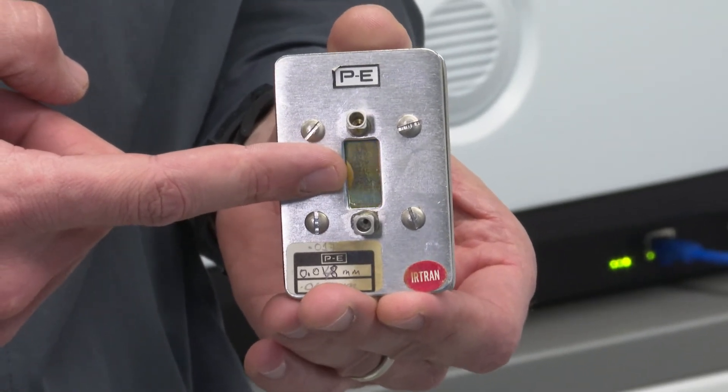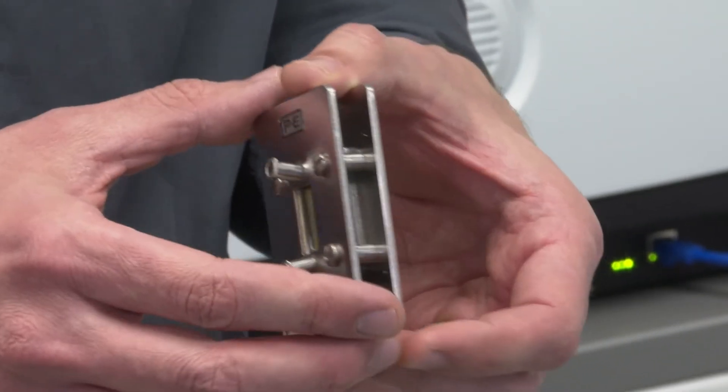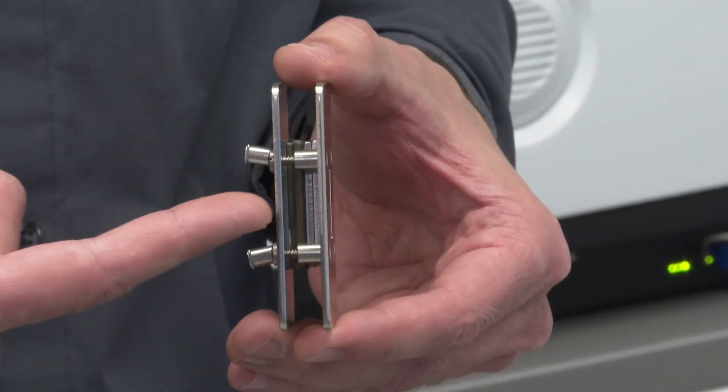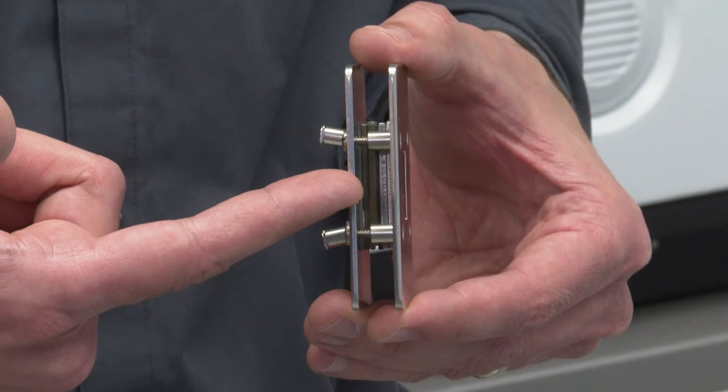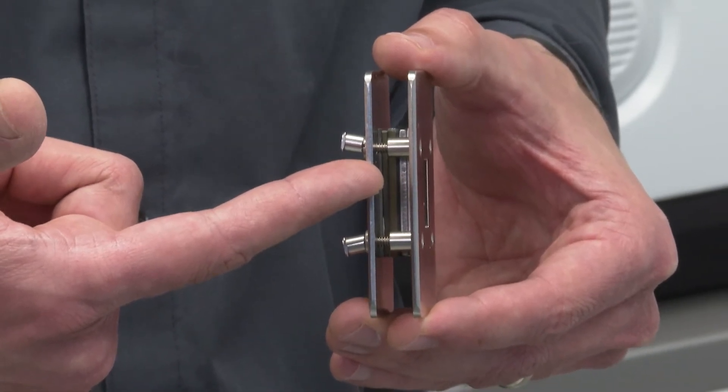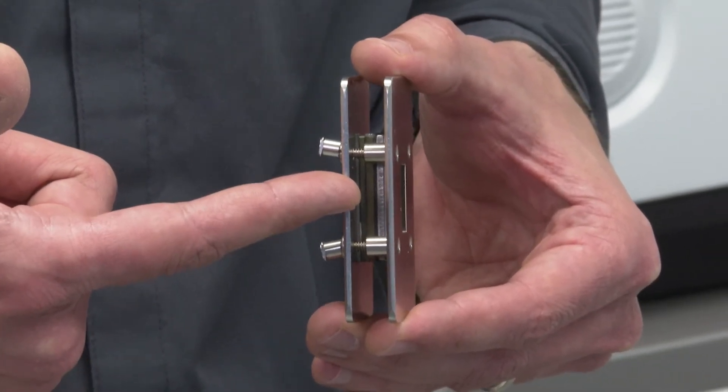There are also considerations of material compatibility. The path length of the cell may also be changed by changing out the spacer. By changing the path length, you can optimize sensitivity for your material or parameter of interest.